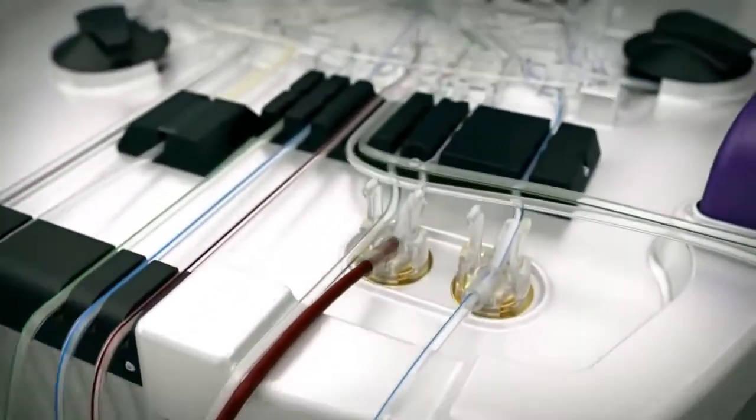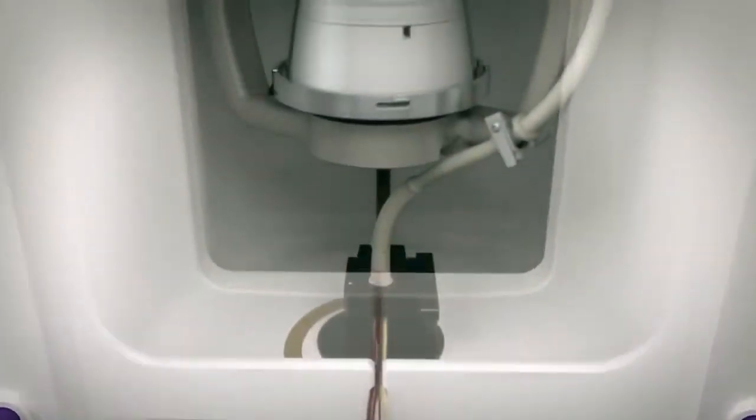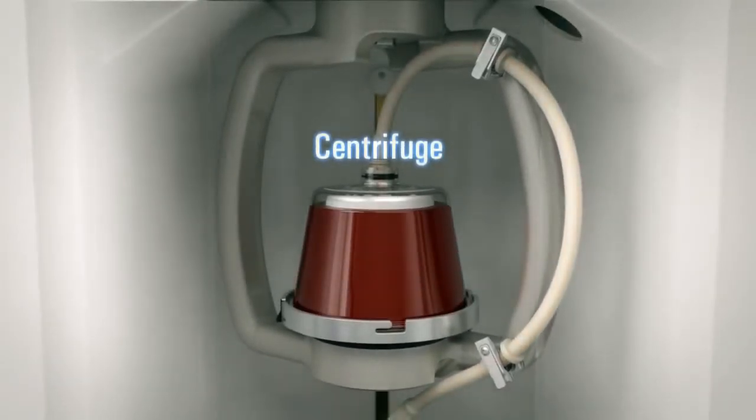The whole blood is transferred to a centrifuge where the Celex system instrument will separate the whole blood into its separate components: red blood cells, RBCs, white blood cells, and plasma.